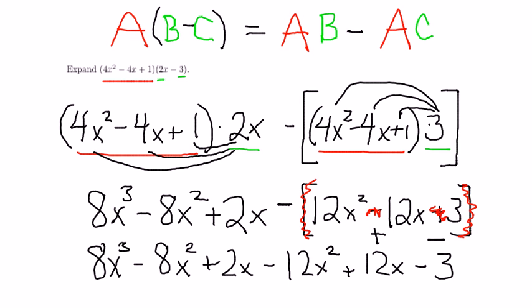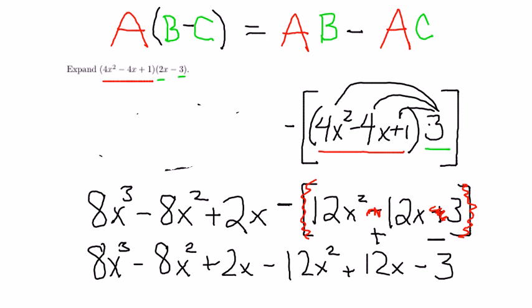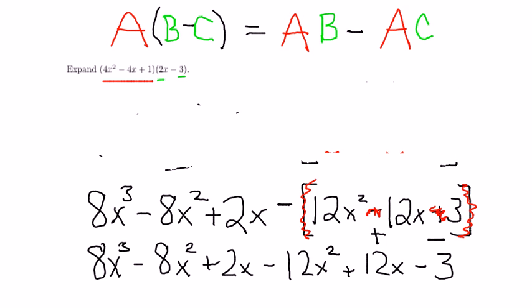Now, I'm going to go ahead and erase to allow me to copy over the final answer. Now, what I like to do is underline each of the terms with as many powers of x as there are in that term. And then, of course, the minus 3 has no powers of x.